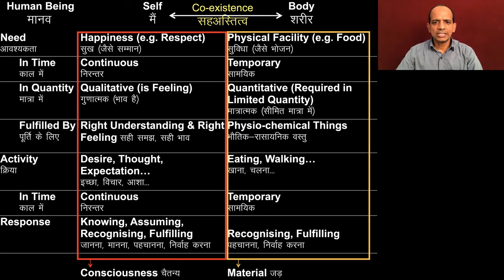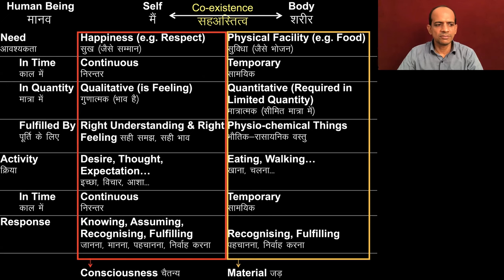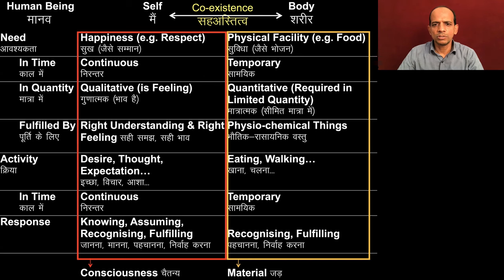In our lectures, we have been able to understand how self and body coexist. The needs of the self are different from the needs of the body. The activities of the self are different from the activities of the body, and the response is also different. We are able to understand that yes, self and body are two different realities — the self is the conscious unit and the body is a material unit — and now we are going to understand this through our direct observation.